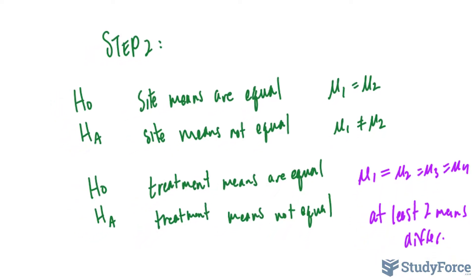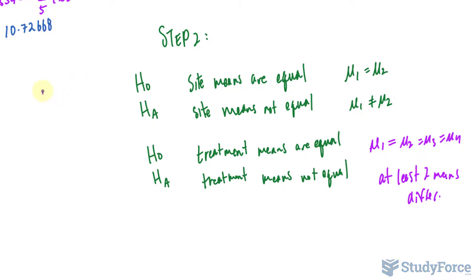Well, we have the F observed for the site, and we calculated that moments ago as 0.8122. And the F observed for the treatments was calculated to be 7.5049.